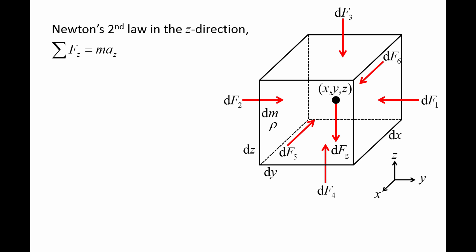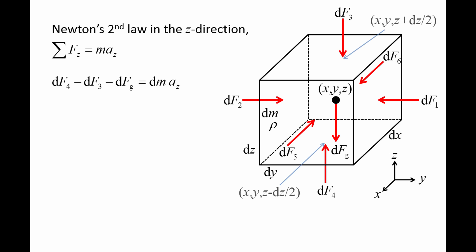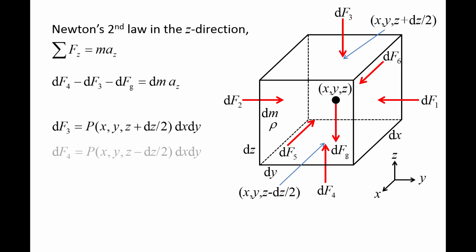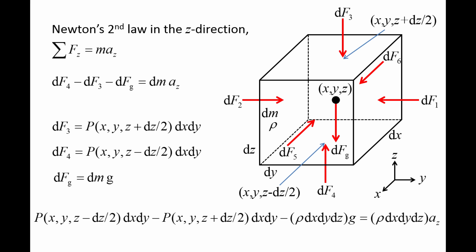Applying Newton's second law in the z-direction: df4 minus df3 minus dfg equals the mass dm times the acceleration in the z-direction, az. Both df3 and df4 act at a distance one-half dz away from the center. df3 acts at a point x, y, z plus half dz, and df4 acts at a point x, y, z minus half dz. We can rewrite the pressure force df3 as the pressure at point x, y, z plus half dz, times the area dx dy. The pressure force df4 is the pressure at point x, y, z minus half dz, times the area dx dy. The gravitational force is dm times the gravitational acceleration g. Now we substitute in the expressions for df3, df4, dfg, and dm into the equation of motion in the z-direction.